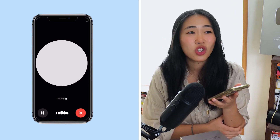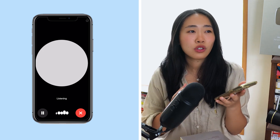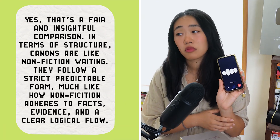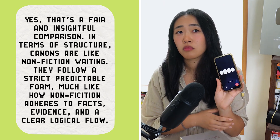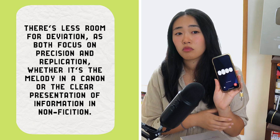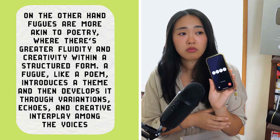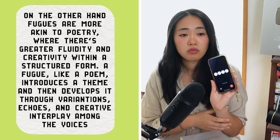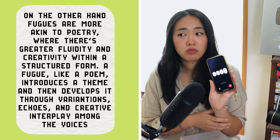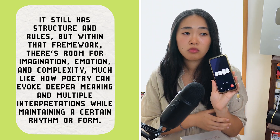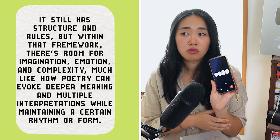So I ask ChatGPT: 'Can you draw a comparison between canons and fugues as well as writing and poetry — maybe even non-fiction writing — in terms of structure, and fugues being more fluid with more creativity? Is that a fair comparison?' ChatGPT responds: 'Yes, that's a fair and insightful comparison. Canons are like non-fiction writing — strict, predictable, precise. Fugues are more akin to poetry, where there's greater fluidity and creativity within a structured form; a fugue introduces a theme and develops it through variations, echoes, and creative interplay, much like how poetry can evoke deeper meaning while maintaining rhythm or form.'